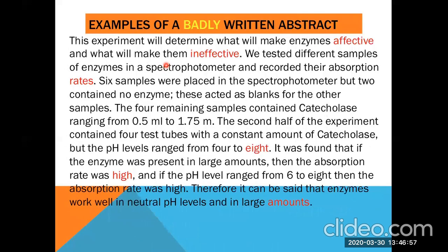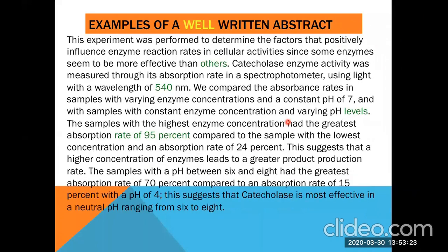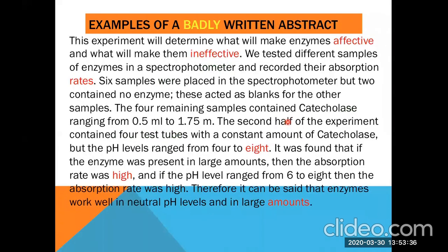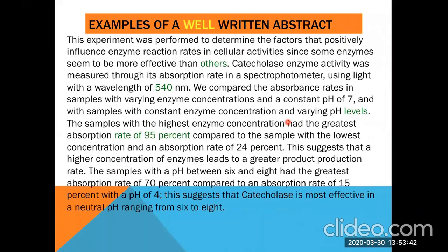Let's move on to this example of a badly written abstract. These are two examples of the same abstract. Sample one is an example of a badly written abstract, while sample two is an example of a well-written abstract. The underlined words — the first in red and the second in green — will show what makes these abstracts good or bad.